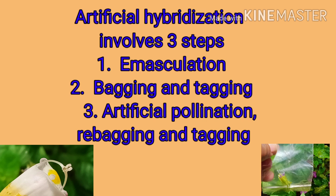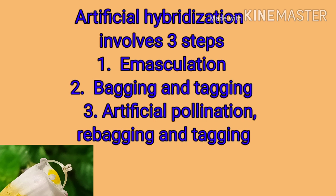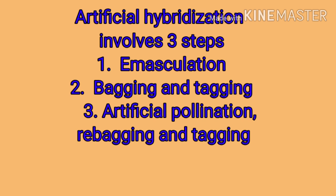The steps involved in artificial hybridization are: Bagging and Tagging, then Artificial Pollination, followed by Re-bagging and Tagging.